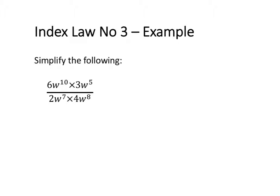We want to simplify 6w to the power of 10 times 3w to the power of 5, divided by 2w to the power of 7 times 4w to the power of 8. The first step is to rewrite that by adding in the missing multiplication signs.